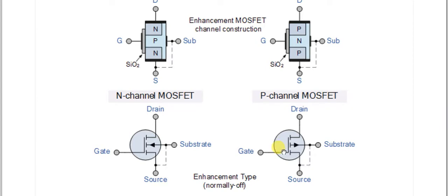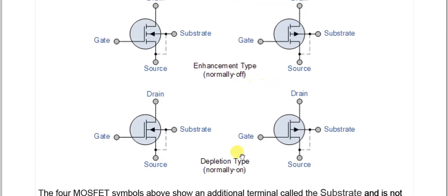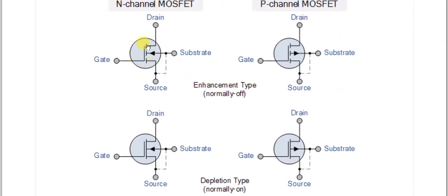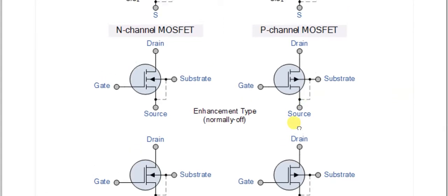We have two types of MOSFET: one is called the enhancement type and the other is called the depletion type. The enhancement type uses dotted three plates in its symbol, while the depletion type uses an undotted, complete single plate. The rest of the figure and terminals are similar.